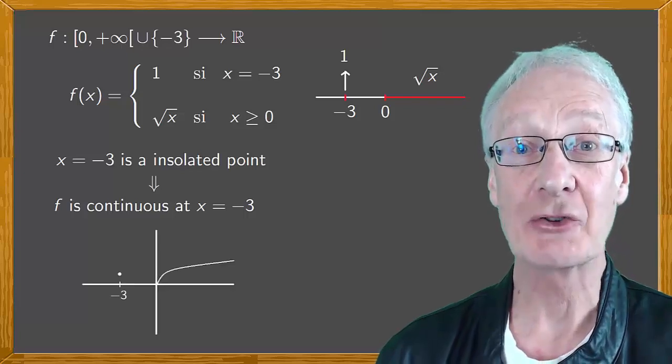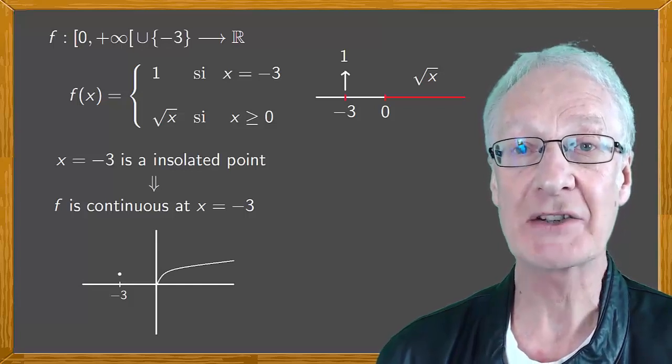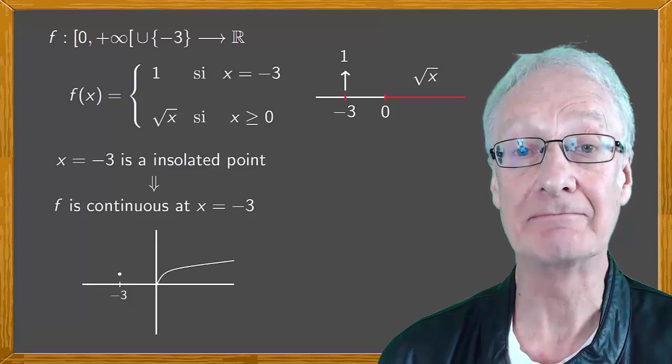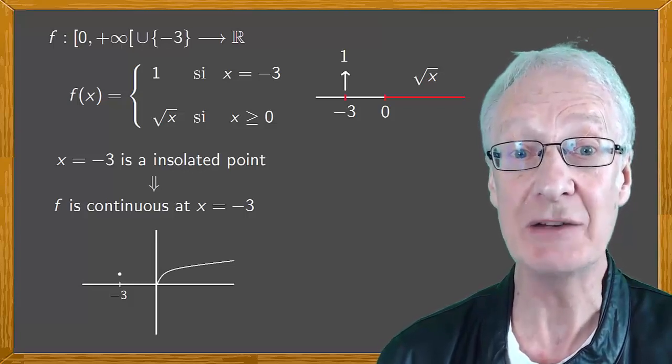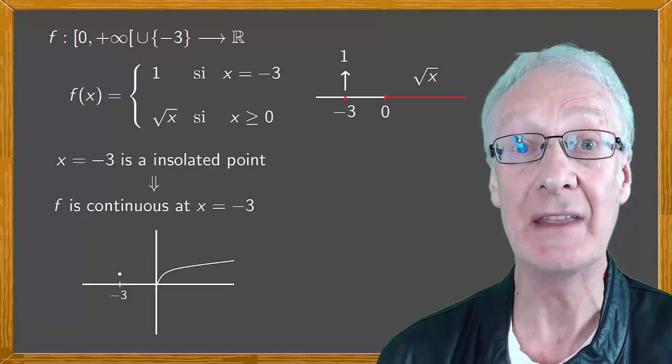So, this is the graph of the function f, and to draw it, from minus three to zero, I lift the pencil from the paper. Yet, this function is continuous, because it's continuous for any point in the domain. And this is what I mean.